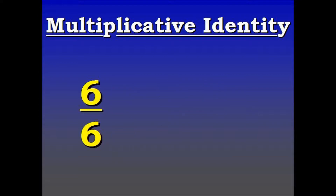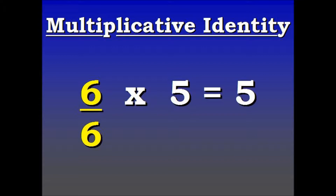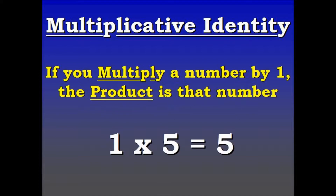So what if you had another example like 6 over 6 times 5? The 6 over 6 is just another way to express 1. So that goes back to our original definition: if you multiply a number by 1, the product is that number.